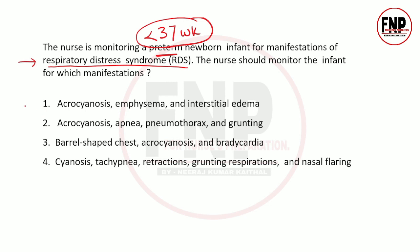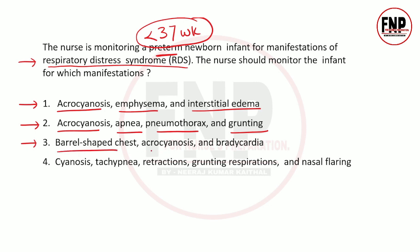Options: 1 - acrocyanosis, emphysema, interstitial edema; 2 - acrocyanosis, apnea, pneumothorax, grunting; 3 - barrel-shaped chest, acrocyanosis, bradycardia; 4 - cyanosis, tachypnea, retraction, grunting respiration, nasal flaring.